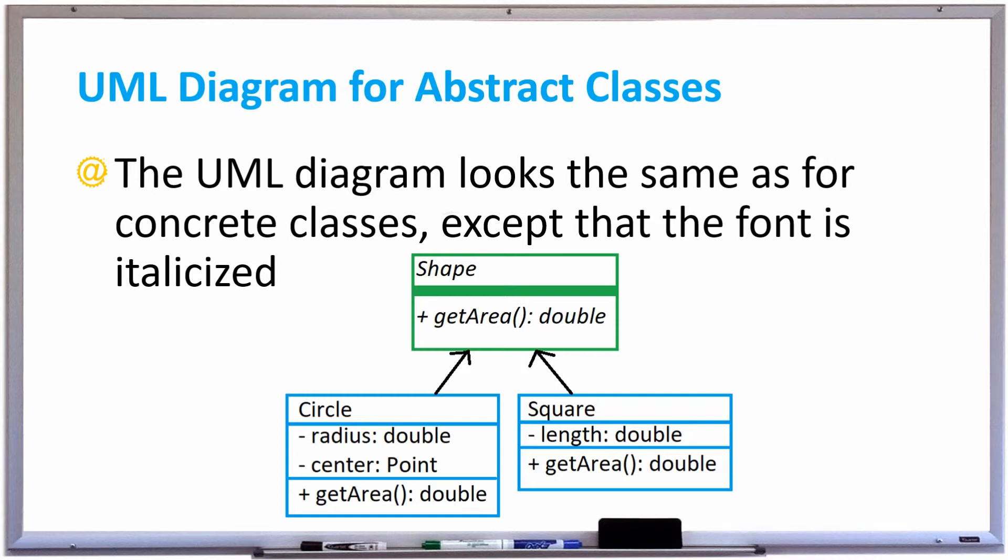So the UML diagram looks the same for concrete classes except that the font is italicized for an abstract class. Take a look at an abstract class called shape. The font is italicized.